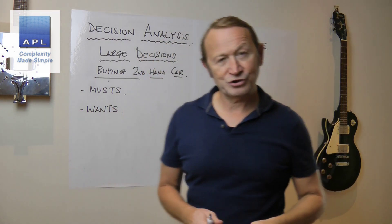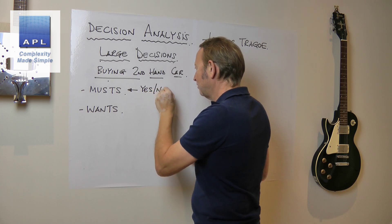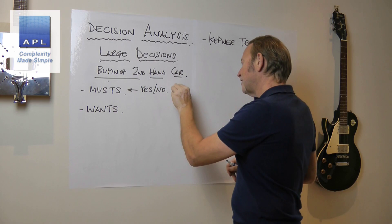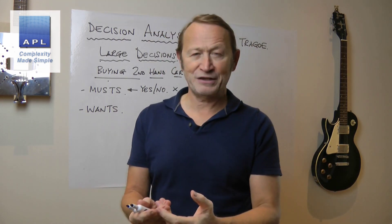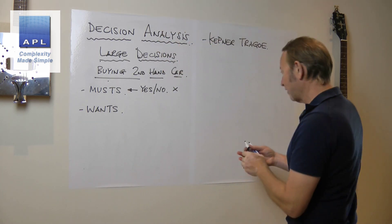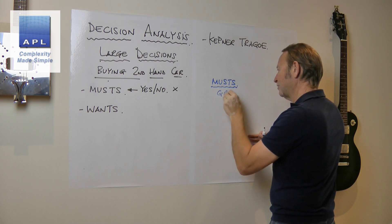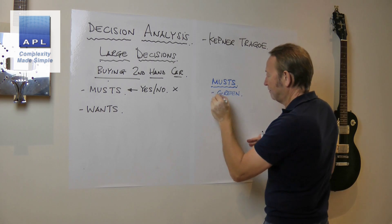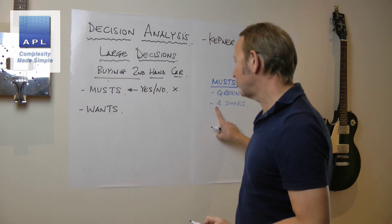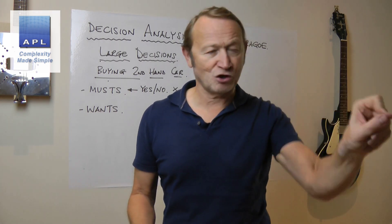Musts are very simple - they are yes or no things. If the feature is not present and the answer is no, then that particular solution cannot be the answer to your problem. So musts are things that you must have. For a car, for example, it must be green - that's my favorite color - and it must have four doors. When I find a second-hand car, if it's not green or it's only got two doors, I just cross it off the list.